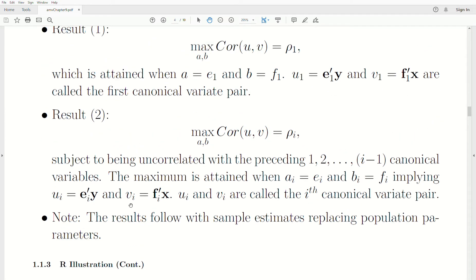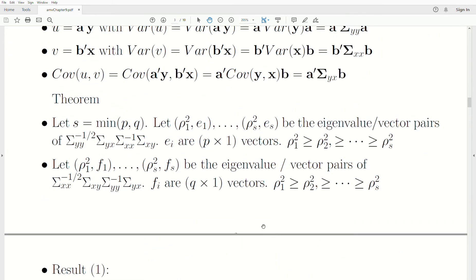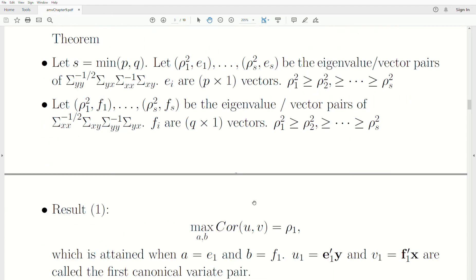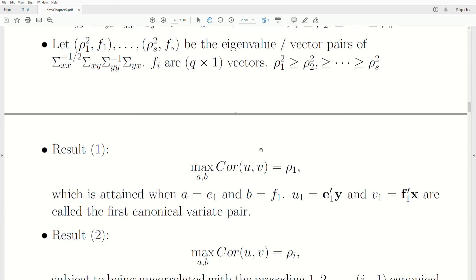Now, here's a big note. The results follow with sample estimates replacing the population parameters. So really, we went through the population theory or structure, but in reality, we use samples. So this would be we would use the sample mean and the sample covariance matrix for all these, but the result still applies.